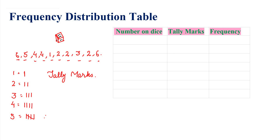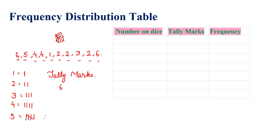So that's one, two, three, four — and one slanting line makes five. Now how will we represent six? To represent six, we draw the five tally marks and then one more vertical line. Because when we make five, we put one slanting line on the fourth tally mark, and then add one more for six.